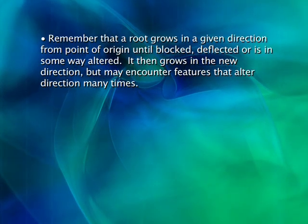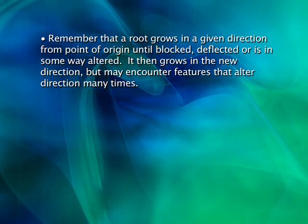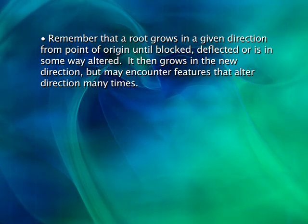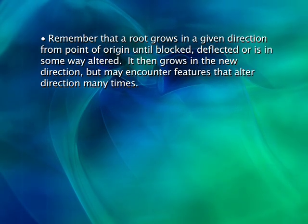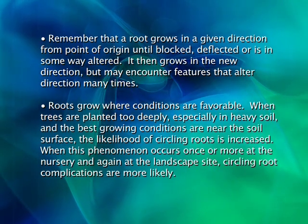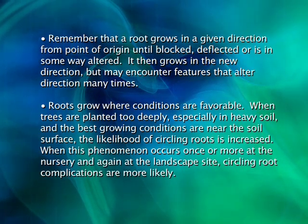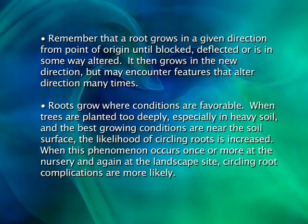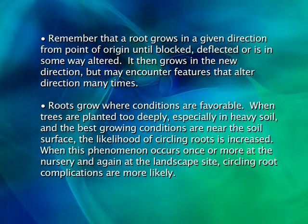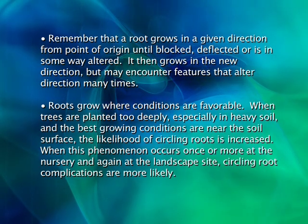Remember that a root grows in a given direction from point of origin until blocked, deflected, or altered in some way. It then grows in the new direction but may encounter features that alter direction many times. Roots grow where conditions are favorable. When trees are planted too deeply, especially in heavy soils where the best growing conditions are near the surface, the likelihood of circling roots is increased. When this phenomenon occurs once or more in the nursery and again in the landscape site, circling root complications are more likely.